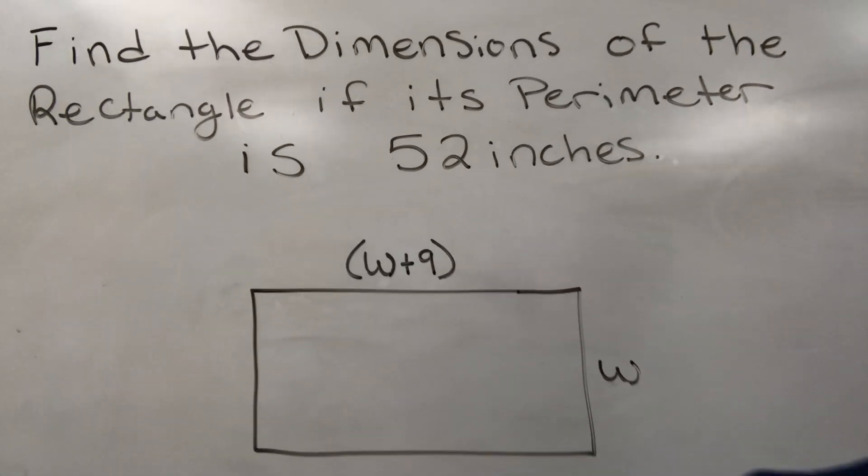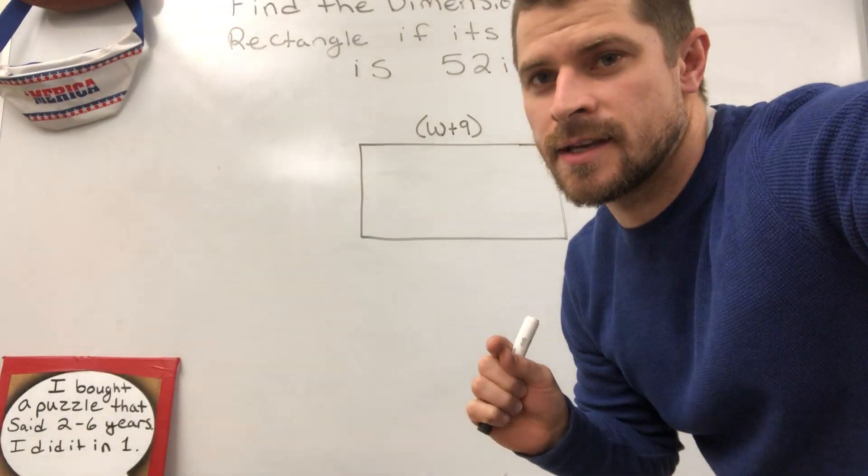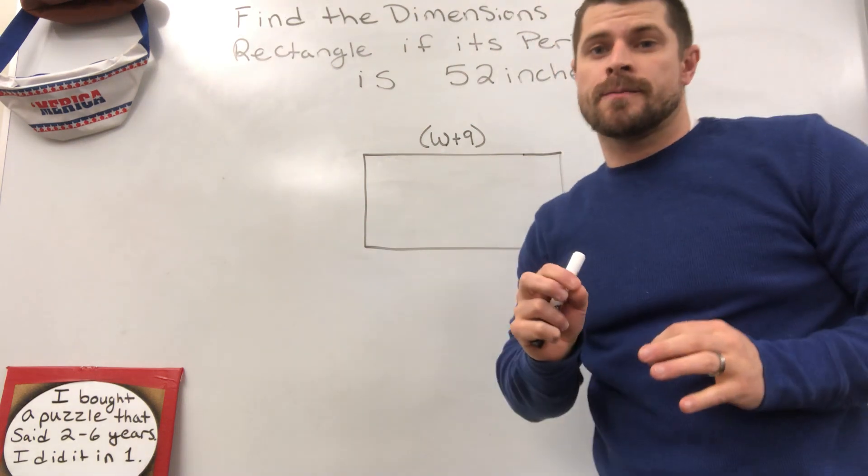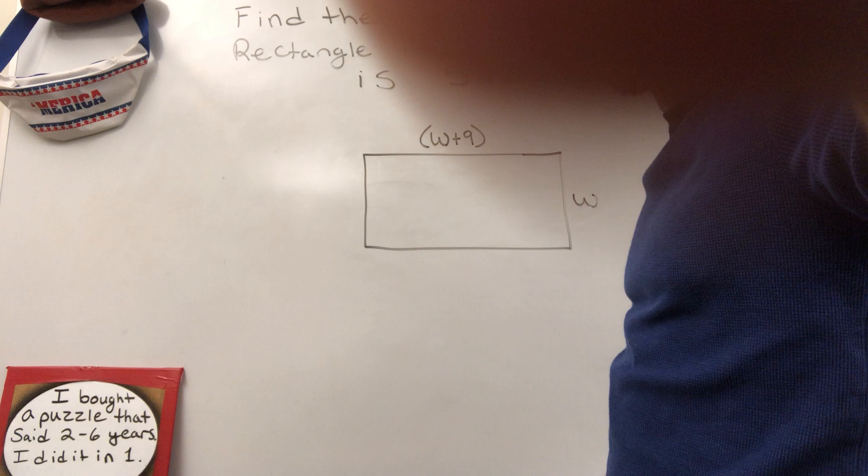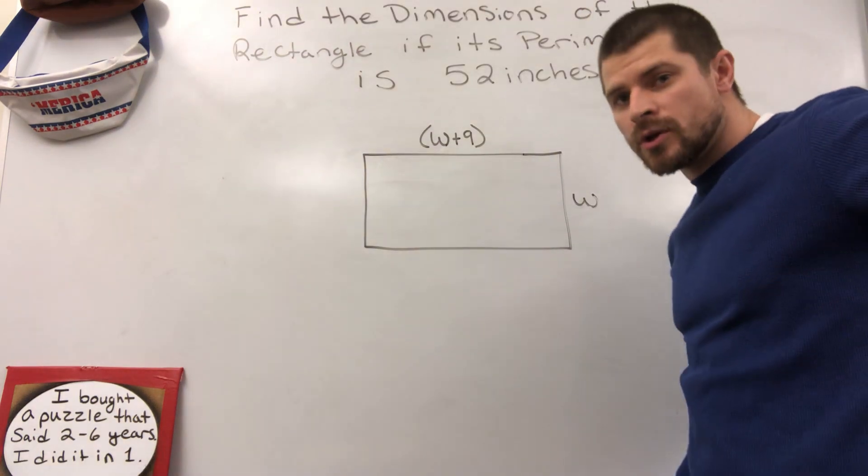Alright, let's do it. We're going to use a little bit of math and we're going to get this done. First thing I need you to understand is we're going to write an equation out. We're going to write an equation that's saying equal to 52 representing the perimeter. What do we know about the perimeter?